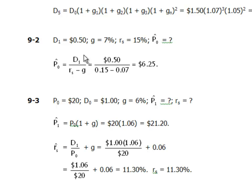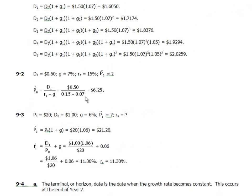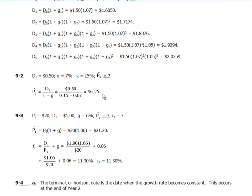Both conditions are satisfied here: g is constant at 7% forever, and 15% is greater than 7%. Plugging in: 0.5 divided by (0.15 − 0.07) = $6.25. The stock price is $6.25 per share.